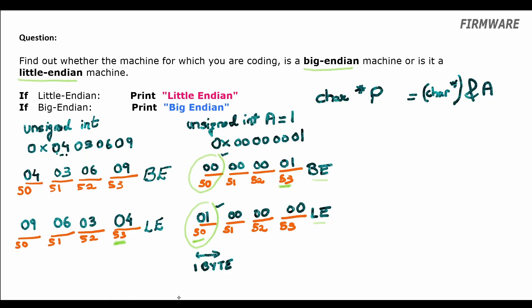If content of the address p is 0, then our system is big endian. So we print big endian. And if content of the address p is 1, then our system is little endian and we print little endian. Wonderful!